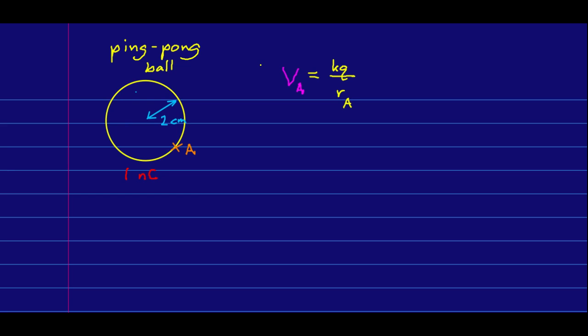So let's find the electric potential on the surface of a charged ping pong ball. We've seen that it's fairly easy to get a one nanocoulomb or even a several nanocoulomb charge on a ping pong ball. And a ping pong ball has a radius of about two centimeters, and so we can easily find the electric potential on the surface.